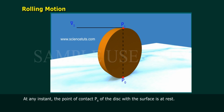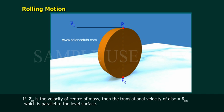At an instant, the point of contact P₀ of the disk with the surface is at rest. If V_CM is the velocity of center of mass, then the translational velocity of disk is equal to V_CM, which is parallel to the level surface.